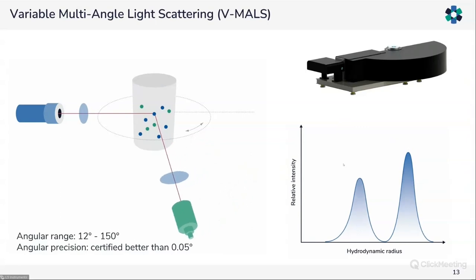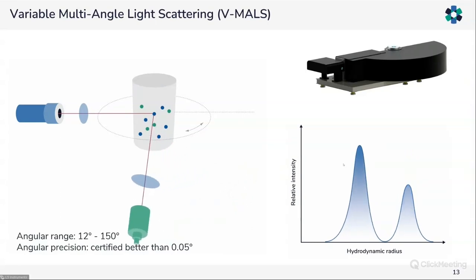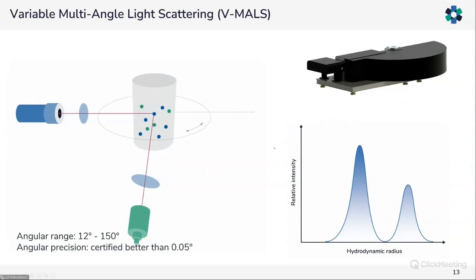The V-MALS capability enables us to vary the angle of the detection unit between 12 and 150 degrees. This is important for poorly dispersed systems because in light scattering, larger particles tend to scatter more light towards smaller angles and will be more visible there. When we want to characterize larger aggregates, we place the goniometer at a low angle for increased sensitivity. Moving to larger angles allows us to better resolve smaller particles. One can therefore improve the sensitivity of the instrument by varying the angle.